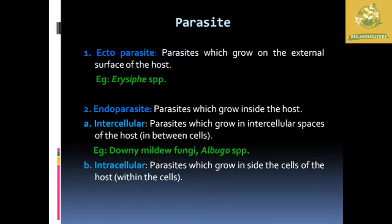Endoparasites are parasites that grow inside the host plant. They are further classified into two types: intercellular and intracellular. Intercellular parasites grow in between the cells — they develop, grow, and reproduce in between the cells of the host plant. Examples include downy mildew fungi and Albugo species.